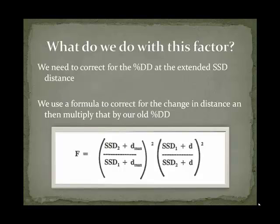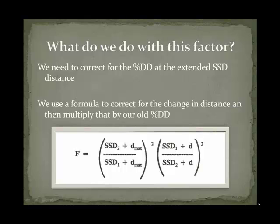What do we do with this factor? We need to correct for the percent depth dose at the extended distance. We use this formula to correct for the change in distance, and then multiply this factor by our old percent depth dose, and then put this into our new monitor unit calculation.